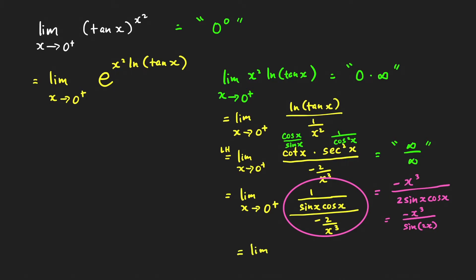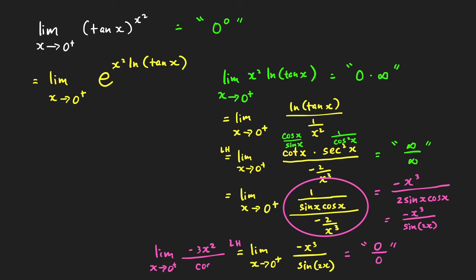Therefore, we have the limit as x approaches 0 from the right of negative x cubed over sine of 2x, which is of the indeterminate form 0 over 0. Applying L'Hôpital's rule, we get the limit of negative 3x squared over the derivative of sine(2x), which is cosine(2x) times 2. The limit of the denominator is 2 since cosine of 0 is 1, and the numerator approaches 0, so the limit equals 0.